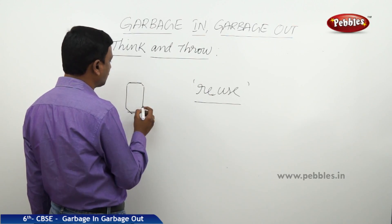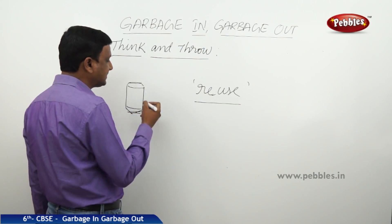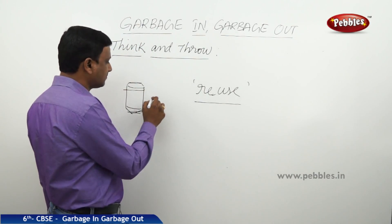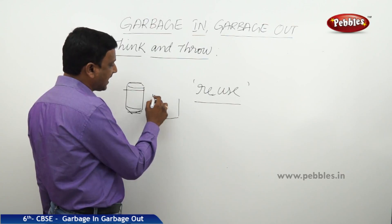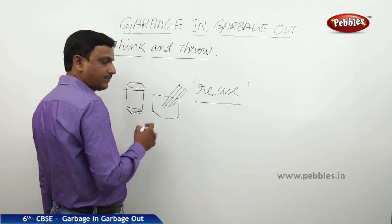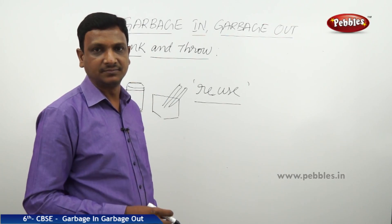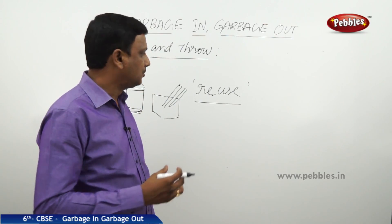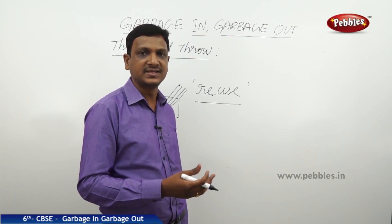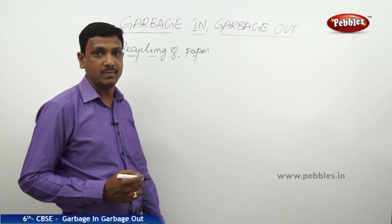Likewise, we can make use of waste paper, waste metal cans, waste tires, and old cloth — all of these can be made into something useful. For example, here is a soft drink can. After drinking, instead of throwing it in the trash, you can cut it and use it as a pen stand or to hold rubber bands.